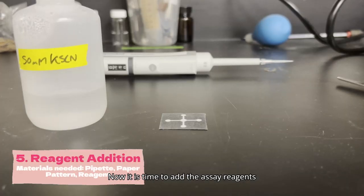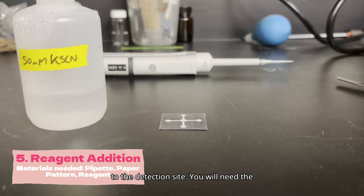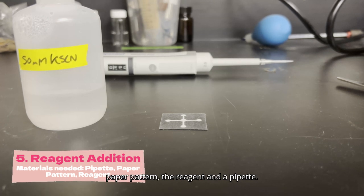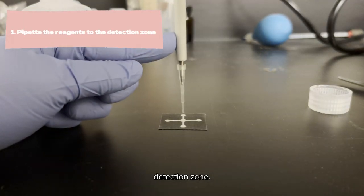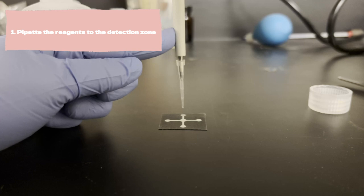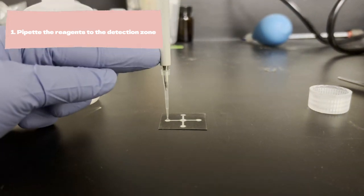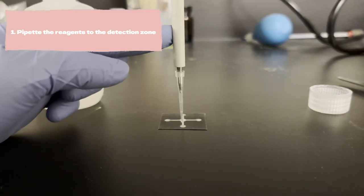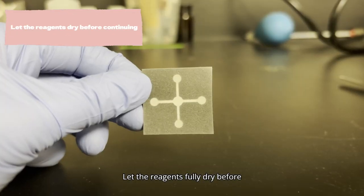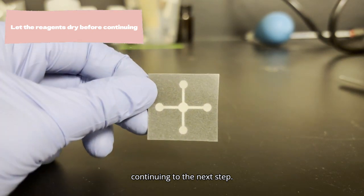Now it is time to add the assay reagents to the detection site. You will need the paper pattern, the reagent, and a pipette. Carefully pipette the reagents to the detection zone. Let the reagents fully dry before continuing to the next step.